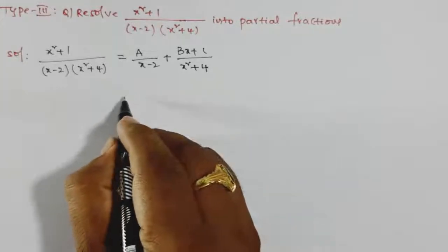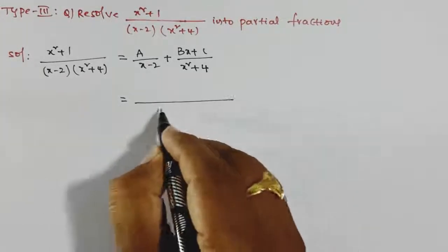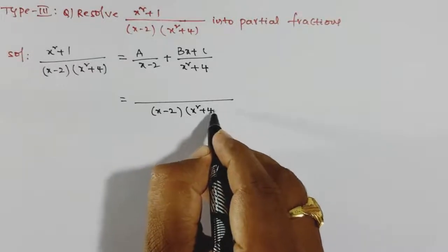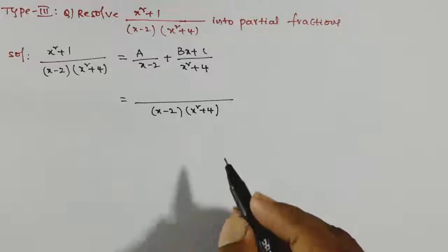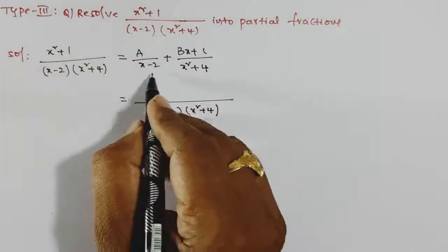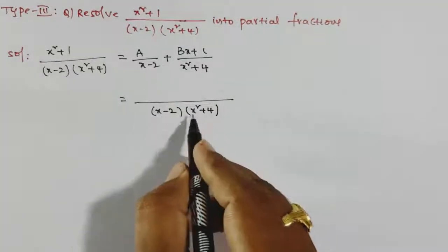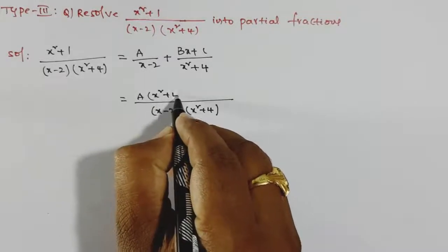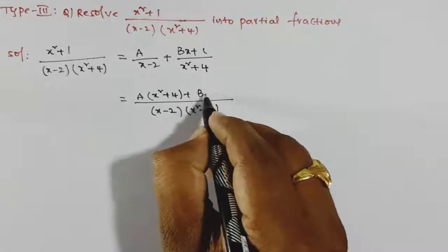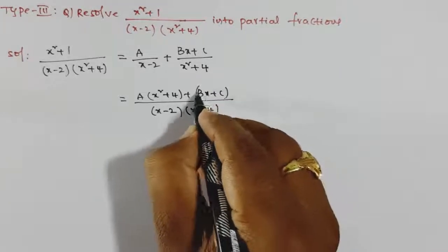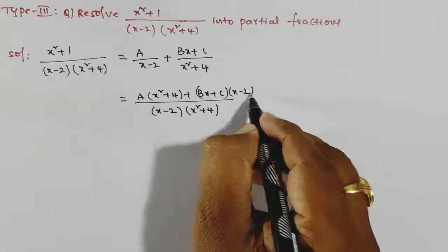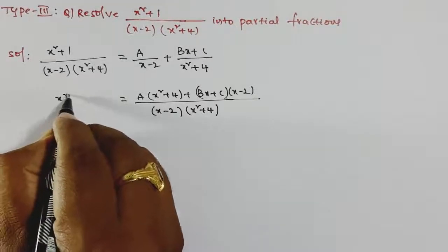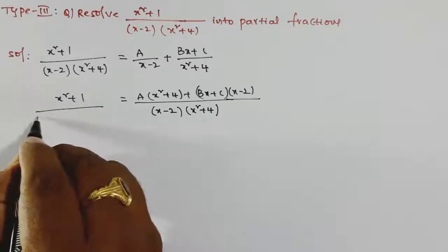We find the LCM of the two fractions. The LCM is (x − 2)(x² + 4). Dividing both sides by (x − 2), we get A·(x² + 4) plus (Bx + C)·(x − 2), and the left-hand side is (x² + 1) divided by (x − 2).